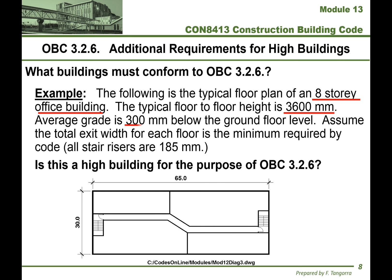Let's point out the relevant items. One: this building is eight stories tall. Two: occupancy — office building. Three: the typical floor-to-floor height is 3.6 meters or 3,600 millimeters. Four: average grade is 300 millimeters — or 0.3 meters — below ground floor level.